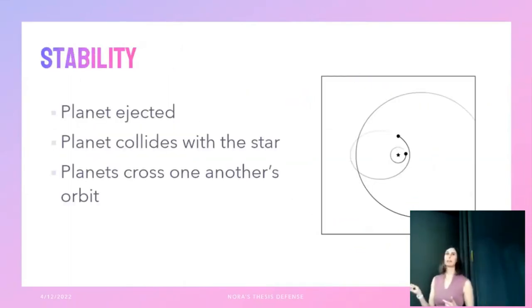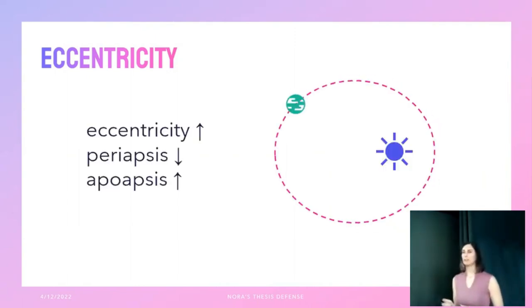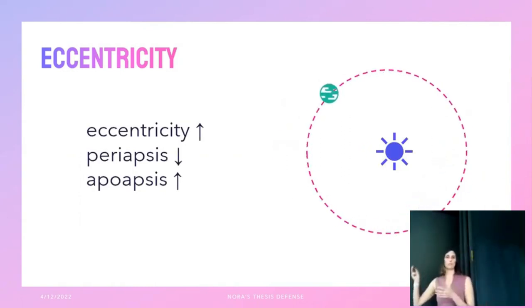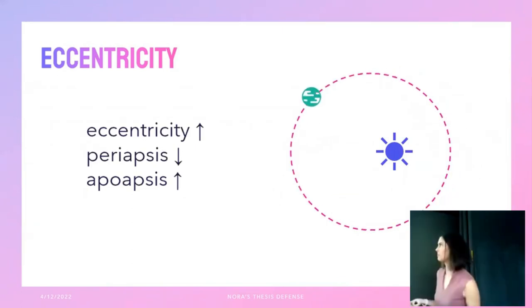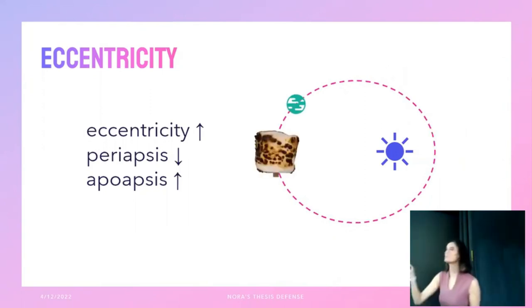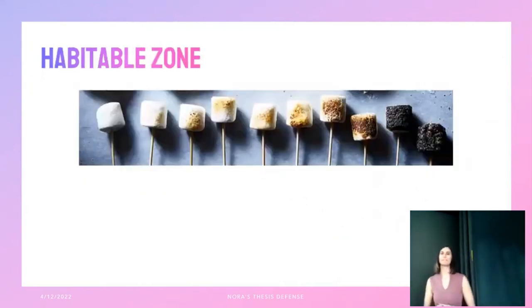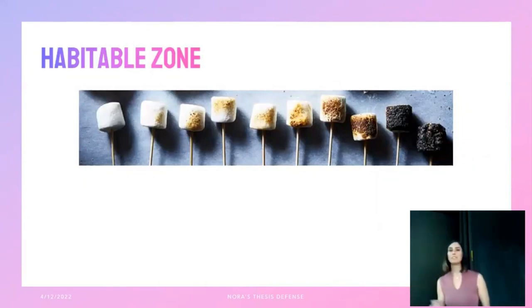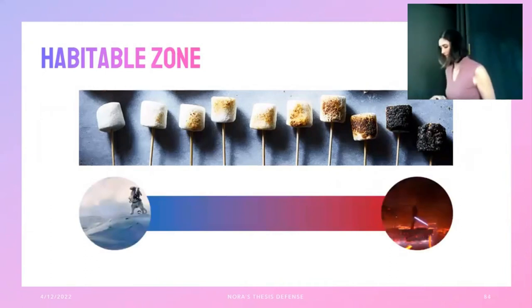For eccentricity's effect on habitability: orbits are ellipses with the star at one focus, so as eccentricity increases the planet gets both closer and farther from the star at different points. Think of it like toasting a marshmallow — if it gets too close to the fire you get burnt bits, and no matter how far you pull it away you still have a burned marshmallow. In this sense, habitability for exoplanets is considered in terms of whether a planet can maintain liquid water on its surface.